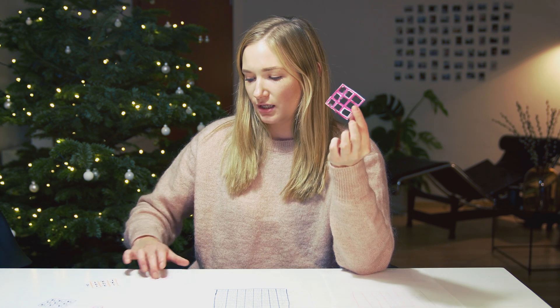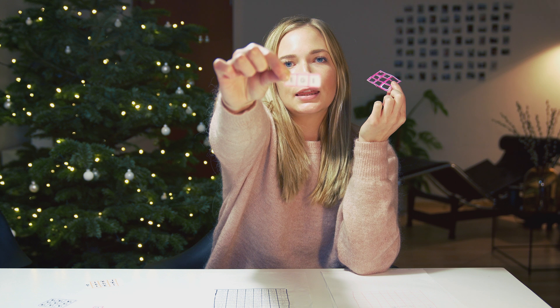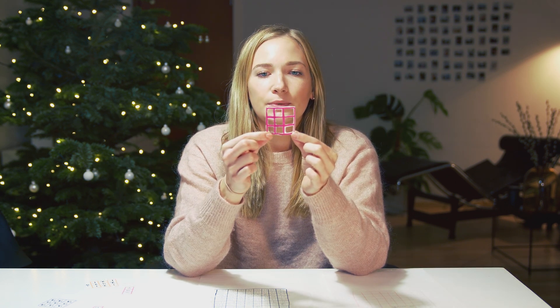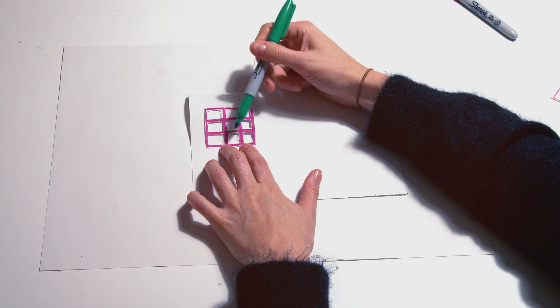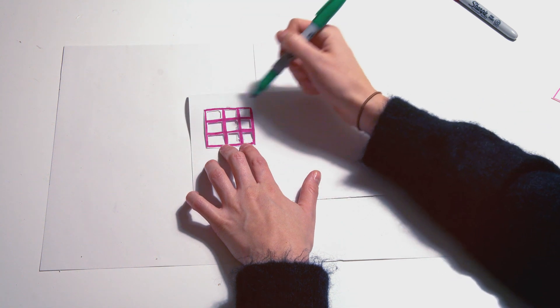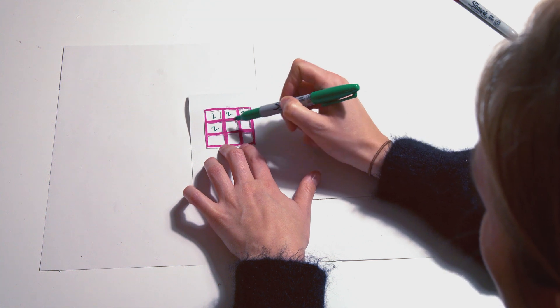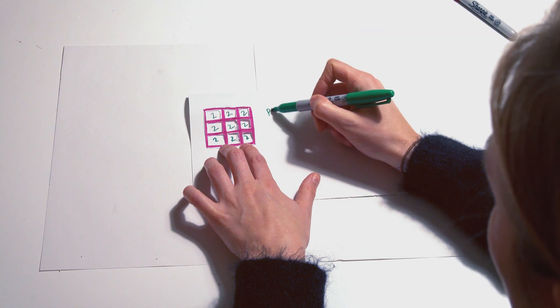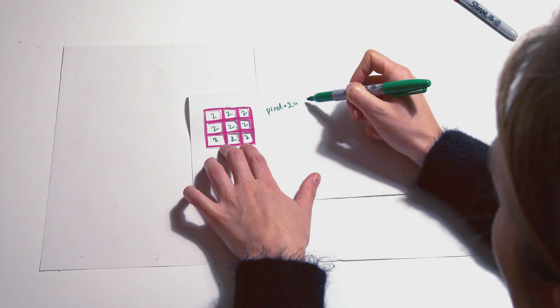All of this is done by having something called a kernel that you swipe over the image and calculate a new output that you put in a new image. A kernel is basically a little matrix. They come in different sizes, can be a big matrix or a small matrix, or just a little vector. In all of these positions, there are small little operations. It can be a kernel which has 2s everywhere, for example, which means you multiply each pixel with the number 2, so you amplify it.